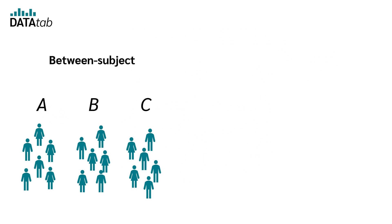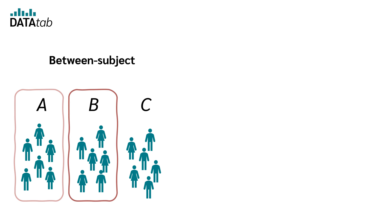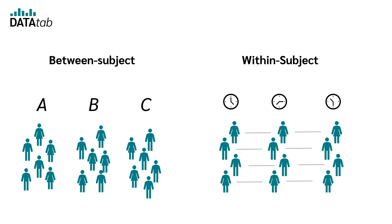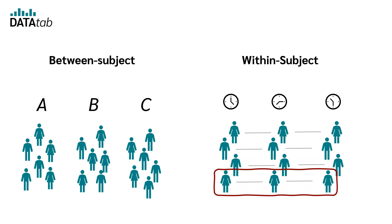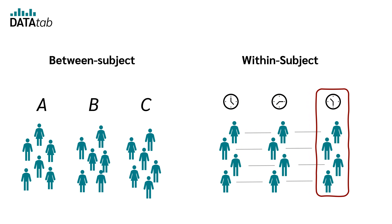To summarize: in a between-subjects design, each subject or participant is only assigned to one factor level, so different subjects only have the influence of their respective group. In contrast, in a within-subjects design, the same subjects or participants are exposed to all factor levels, which enables a direct comparison of their reactions to each factor level.